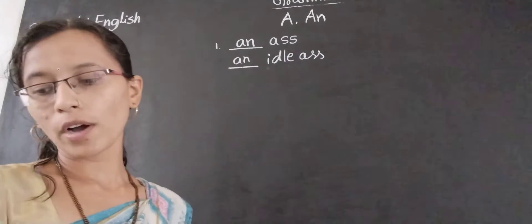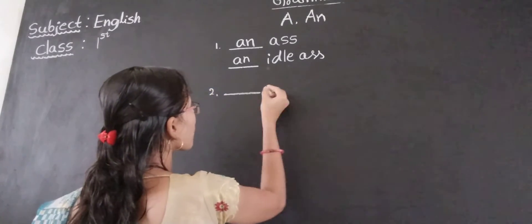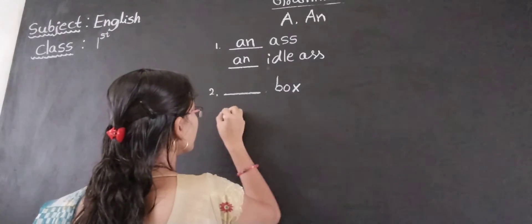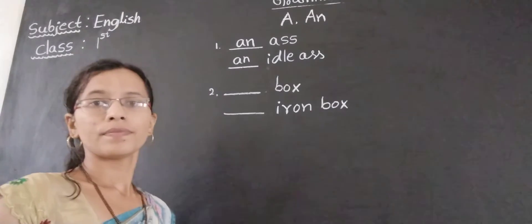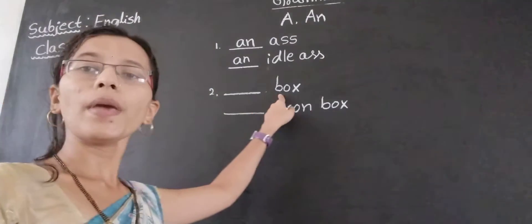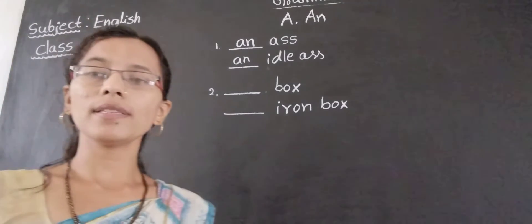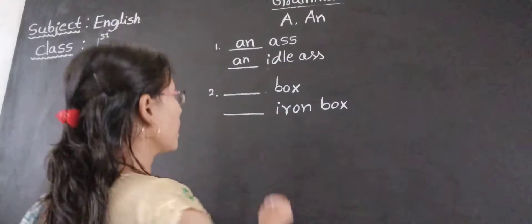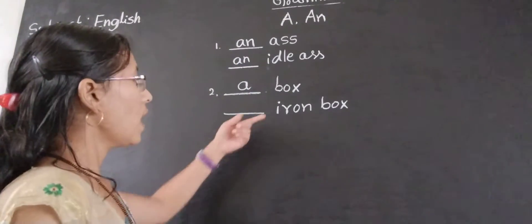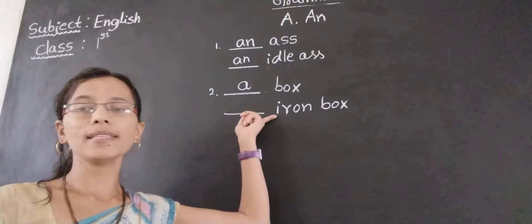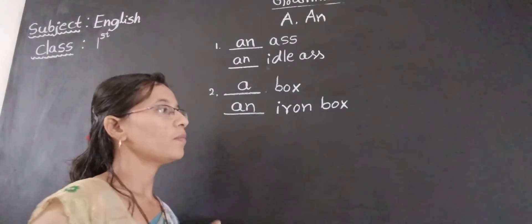Next: box, iron box. See here — B means that is a consonant sound. Beginning of consonant sound, we have to use A. A box. Then iron box — iron. I means that is a vowel sound. Beginning of vowel sound, we have to use AN. AN iron box.